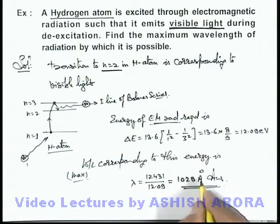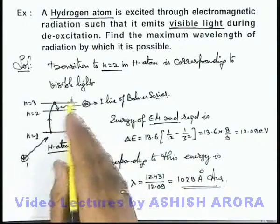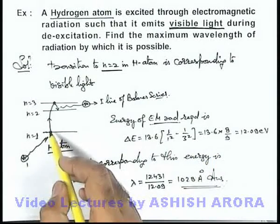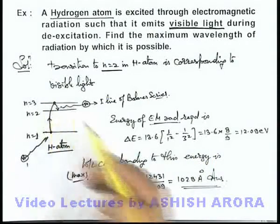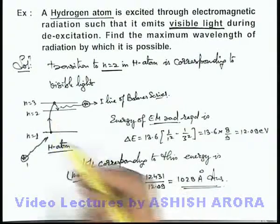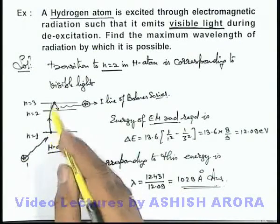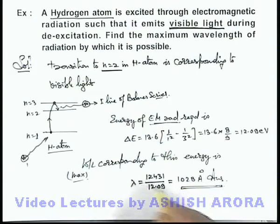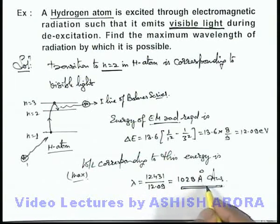So any wavelength lower than this value will possess energy more than this, at which this is possible. If the energy difference is equal to corresponding transition levels which are involved in transition, so maximum wavelength or minimum energy radiation which makes it possible is 1028 angstrom.